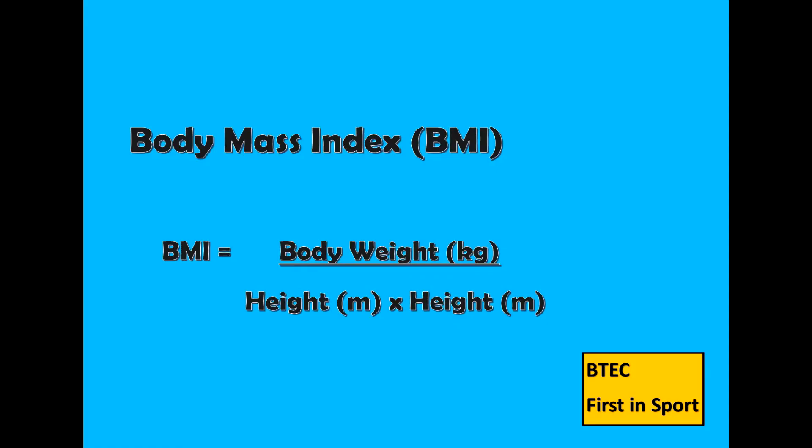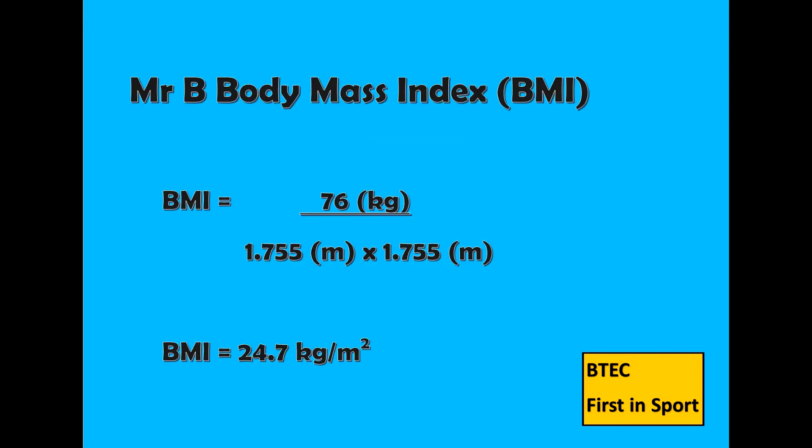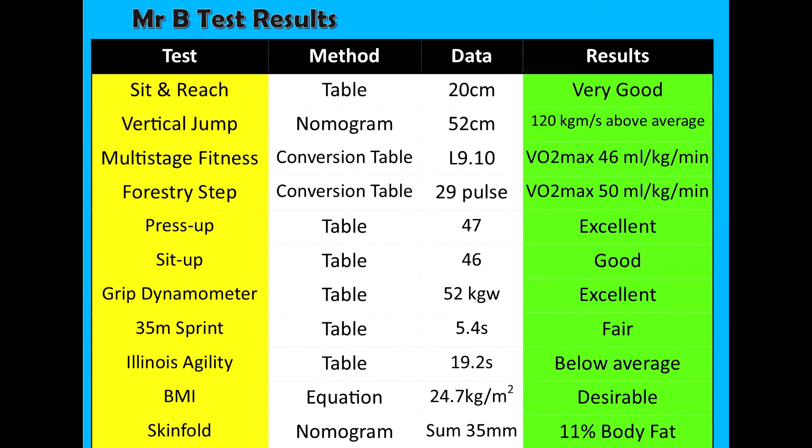Here are a few examples of how BMI and skinfold measurements can be interpreted. The body mass index uses the equation: body weight divided by height times height. To calculate my BMI, it was 76kg divided by 1.755m × 1.755m. This came out at 24.7, which on the conversion table came to desirable.